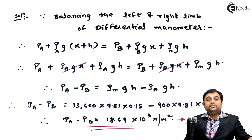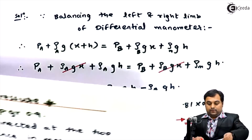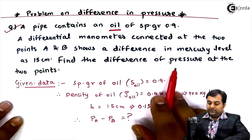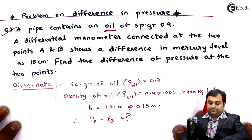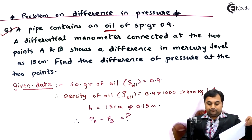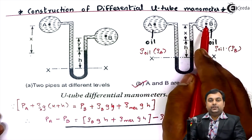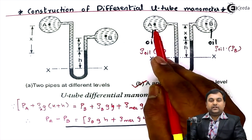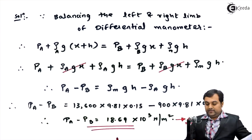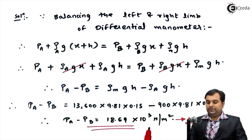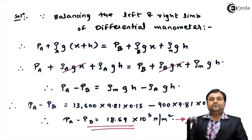So in this problem, the question was to find the difference of pressure at the two points A and B. We have calculated that difference and the answer is Pa minus Pb equals 18.69 × 10³ Newton per meter square. With this we complete the problem.